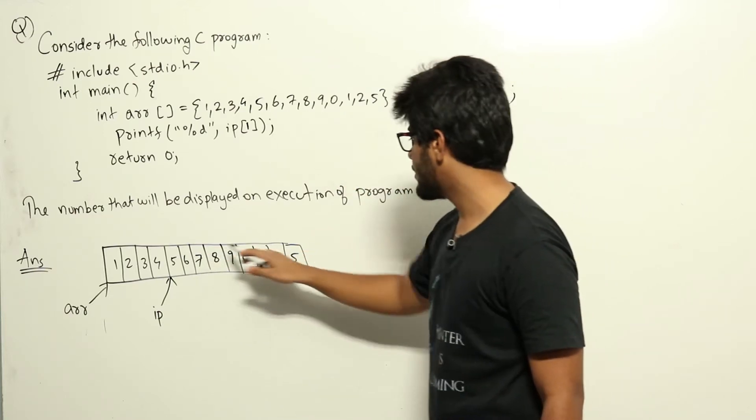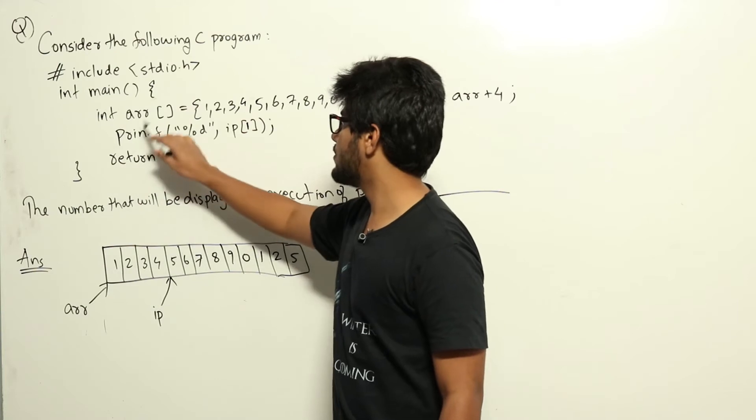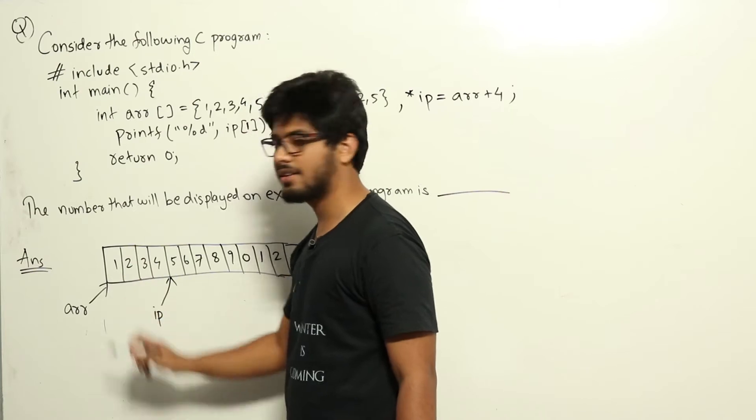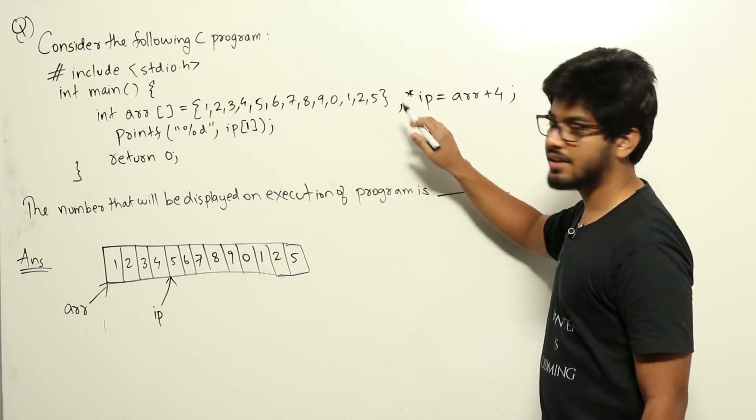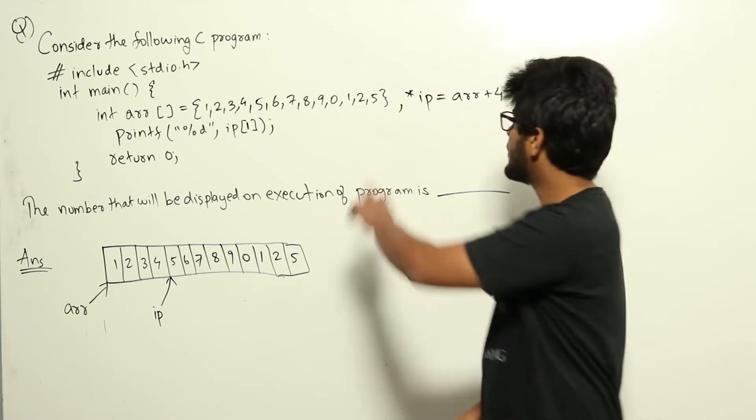The array looks like this. The variable ARR will be a pointer to the first element in the array, so ARR will be pointing to this part. Now we are creating another integer pointer IP. IP will be ARR + 4.